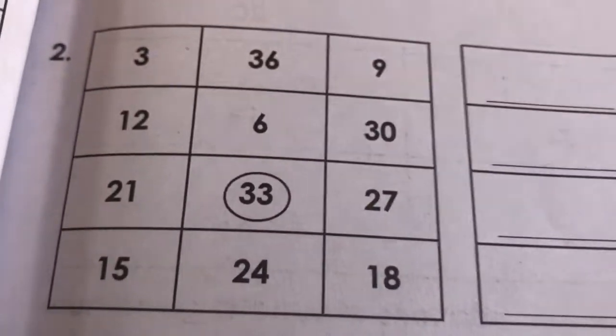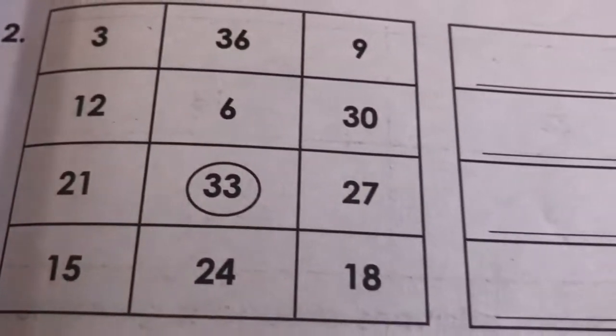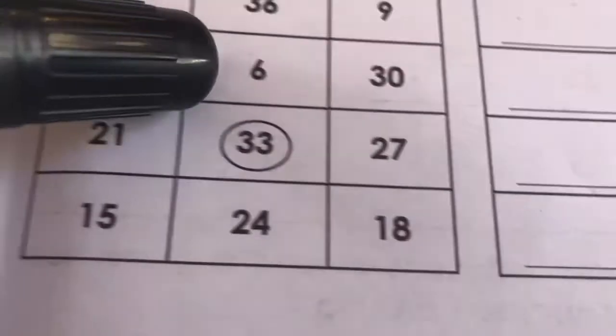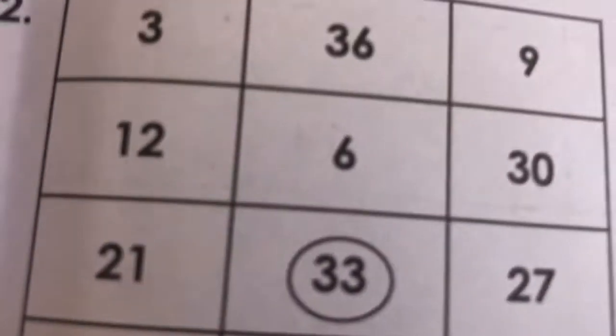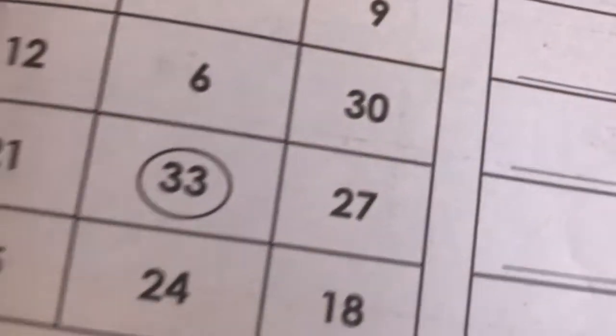What number is above 33? Surely 6. Below 33, 24. To the left of 33, 21. To the right of 33, 27. Good.